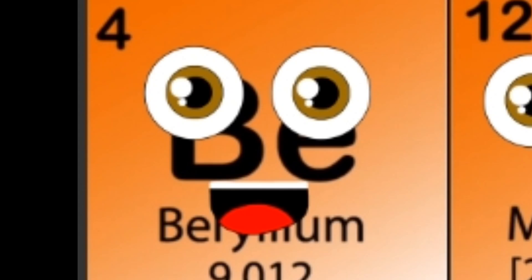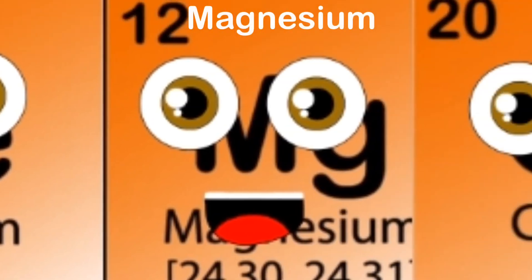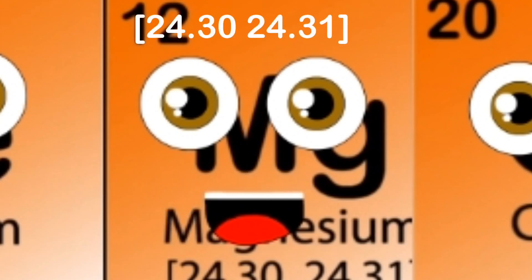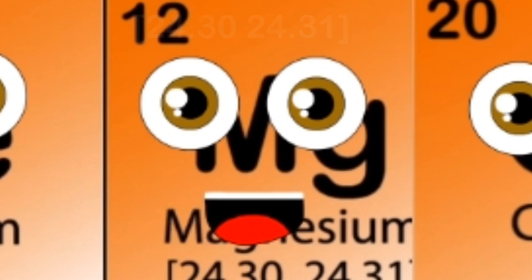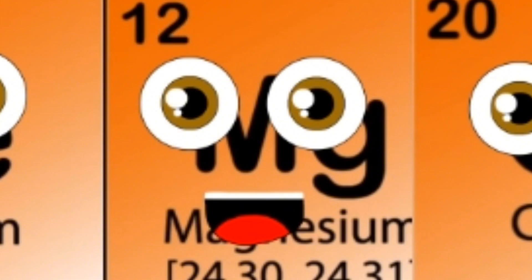Magnesium is my name. My atomic number is 12, 24 is my atomic mass. I'm a light metal as well, my symbol is Mg. Magnesium is needed to make chlorophyll in plants.